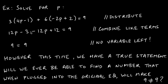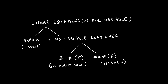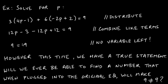Now we combine like terms: 12p and −12p cancel each other out since they are opposite signs. On the left we're left with −3 + 12. The right-hand side 9 was never touched. Again, notice we have no variable left over — just like the previous example.